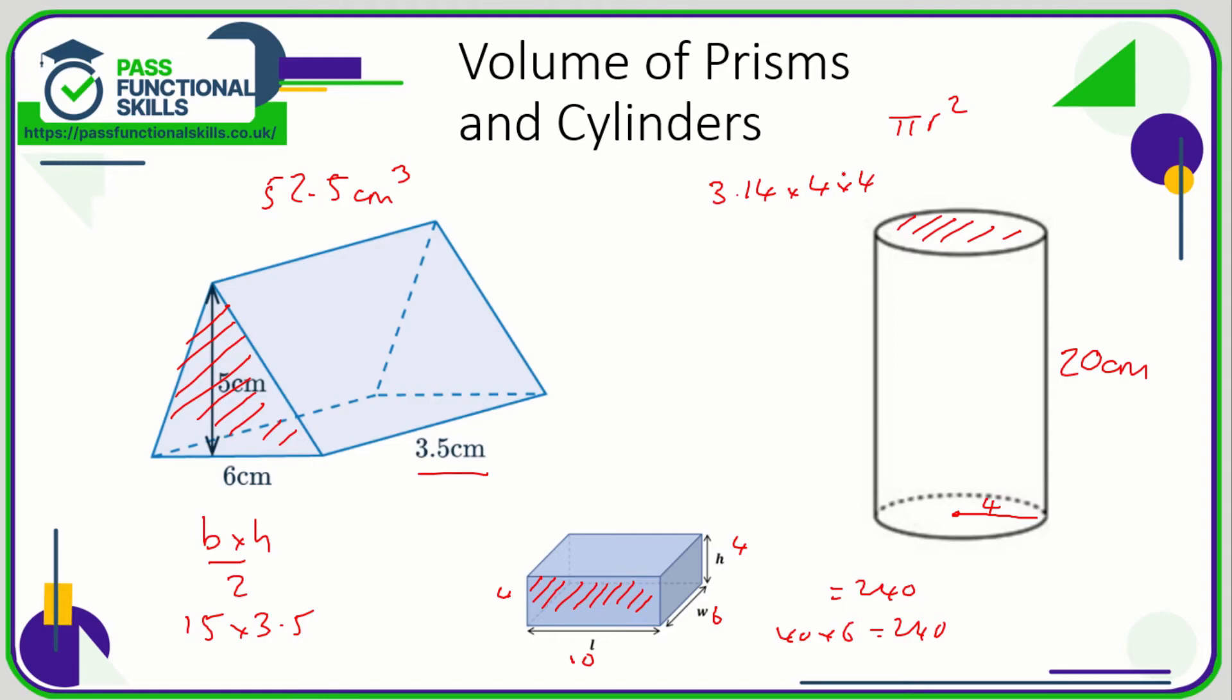The area of the circular face is 3.14 times 4 times 4, which is 50.24. We just need to multiply the area of this face by the 20 and we've got the volume, which is going to be 1004.8 cubic centimeters.